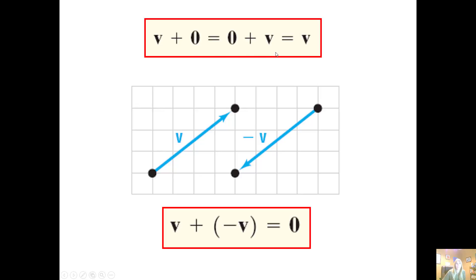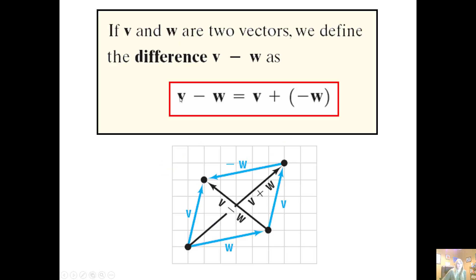If we add the zero vector to a particular vector, we just get the vector back. If you add the negative, it simply changes the direction—the magnitude stays the same but you change direction. If we have two vectors and want to find the difference, we add vector v to the negative of vector w. I would reverse my direction.